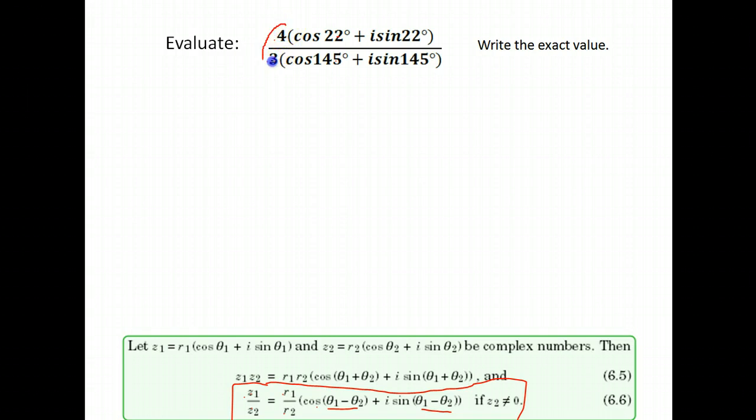So let's try this. We're supposed to divide the numbers that are in front, so we'll have 4 divided by 3, cosine of our angle subtracted, so 22 minus 145, plus i sine 22 minus 145. That gives me 4/3 times the cosine of negative 123 plus i sine negative 123.